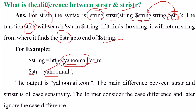The main difference between strstr and stristr is case sensitivity. Both are the same except for case sensitivity. strstr considers the case difference, while stristr ignores the case difference — meaning upper case and lower case.